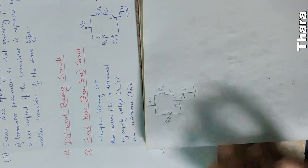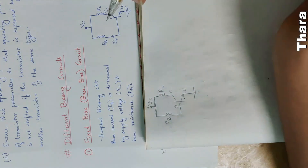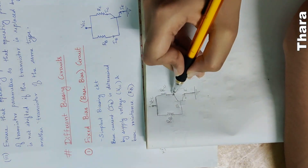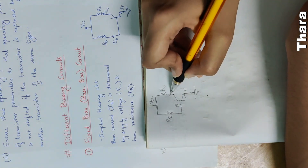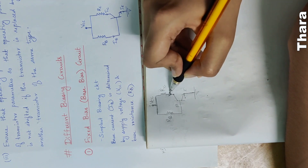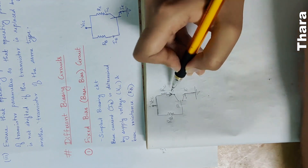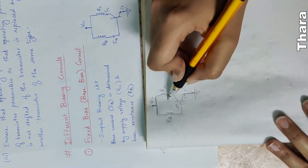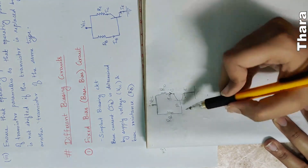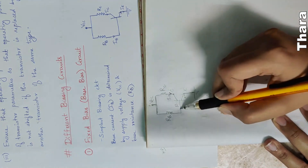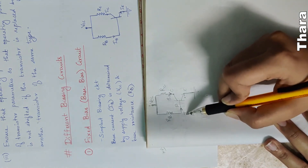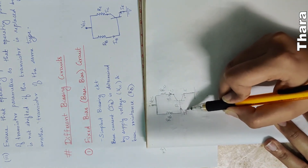This is the current. The collector terminal carries current IC, and this is the base current IB.